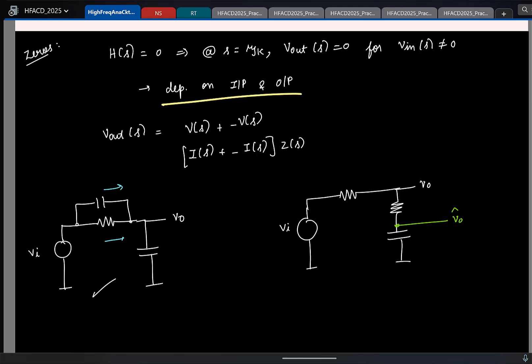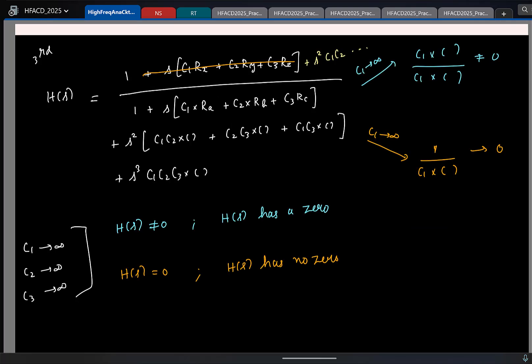And the foolproof way to detect if your circuit has zero is the following. You take any capacitor in your circuit, make it infinity that is you short the capacitor. If the output is non-zero, you have a zero. Similarly, if you have two capacitors, you choose two capacitors in your circuit, short them simultaneously. And for any combination of two capacitors, if the output is non-zero, then you have how many zeros? Two zeros and this argument you can extend beyond.